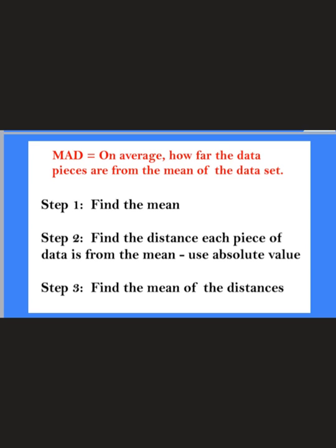These are the three steps to find it. First you're going to find the mean — find the average of the data set by adding them all up and dividing by how many are in the data set. Next you will find the distance each piece of data is from the mean. Subtract each piece of data from the average, and make sure to always use the absolute value of the answer you get.